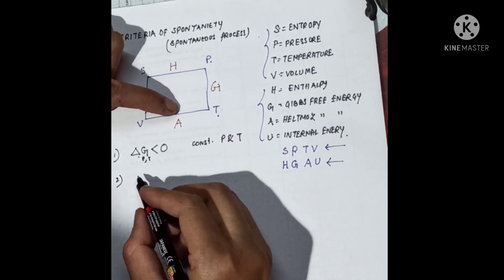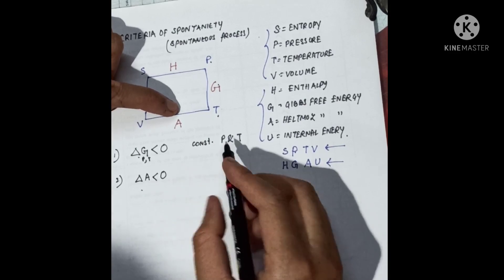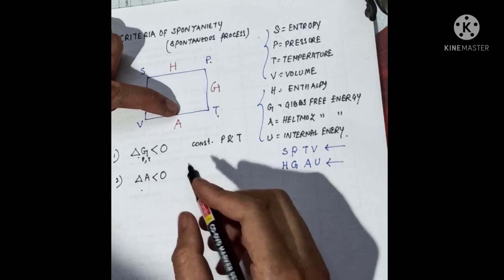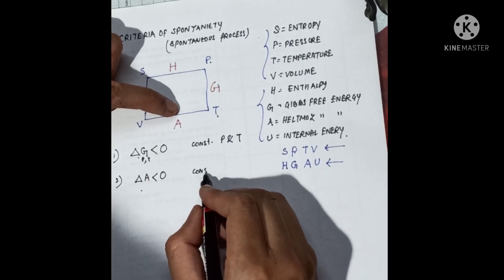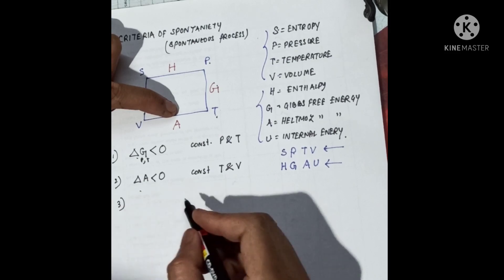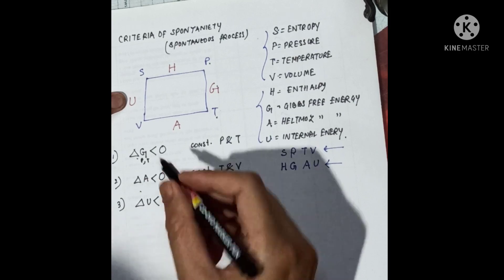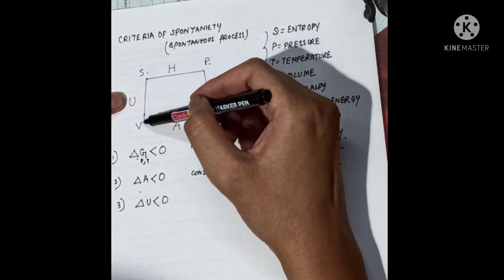In the same way, the second: delta A less than zero at constant T and V. The third condition is about U: delta U less than zero at constant S and V.